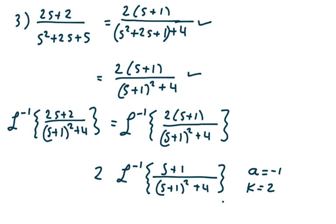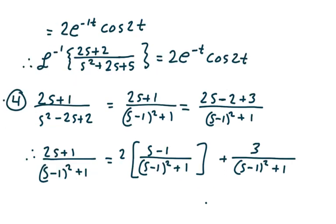So the inverse Laplace transform of (2s plus 2) over (s plus 1) squared plus 4 is the inverse Laplace transform of 2 times (s plus 1) divided by (s plus 1) squared plus 4. I pull the 2 out in front and get 2 times the inverse Laplace transform of (s plus 1) over (s plus 1) squared plus 4. Here a is negative 1 and k is 2, because 2 squared is 4. So this equals 2e to the negative t times cosine of 2t.